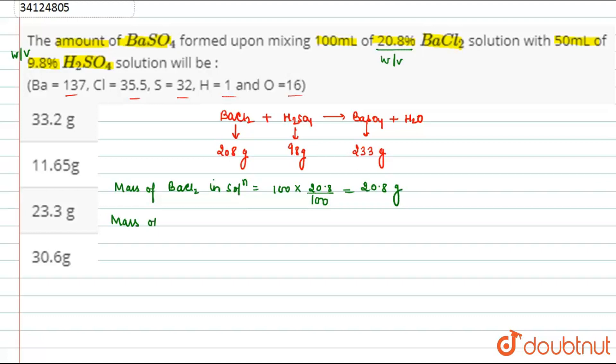And similarly, mass of H2SO4 in solution. How much will it be? This will be equal to 50 into 9.8 divided by 100. This will be equal to 4.9 grams.